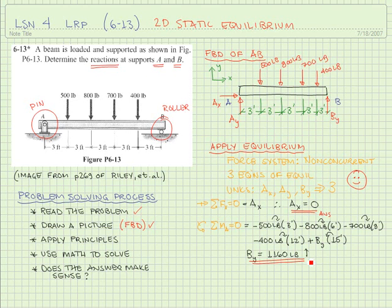Now we're down to only one more unknown, and we have one more equation of equilibrium at our disposal. Summing the forces in the y direction, setting them equal to zero. Up will be positive according to our coordinate system that we have established.